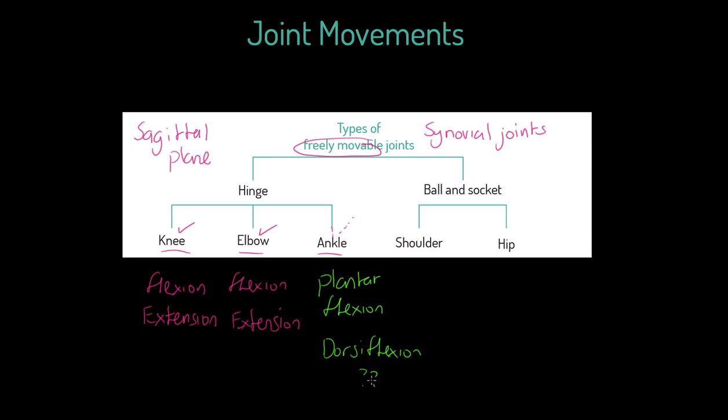Now your shoulder and your hip interestingly can also do flexion and extension, but notice these are not hinge joints, they're ball and socket. They can also do extension. Now we're going to go into other movements in a second, but these ones I really want to stress. Flexion at a ball and socket joint is when a person moves their limb in front of the body.